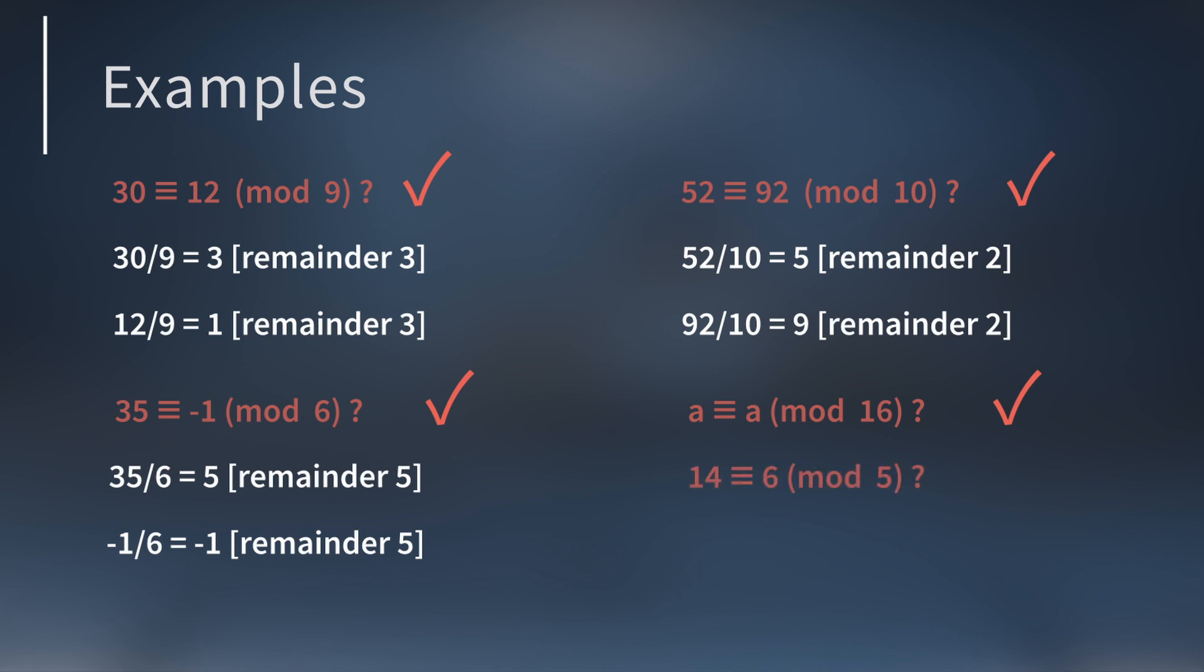How about this congruence? 14 is congruent to 6 mod 5. This is false. Dividing both numbers by 5, 14 has a remainder of 4, and 6 has a remainder of 1. So these two are not congruent mod 5.